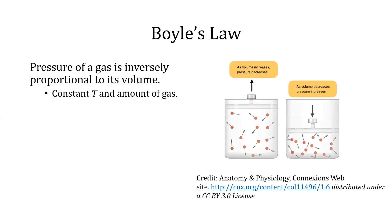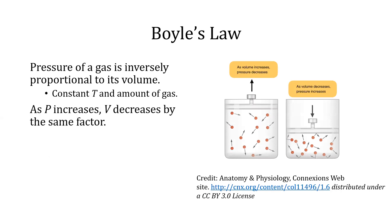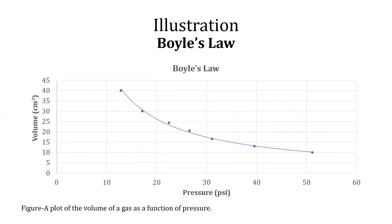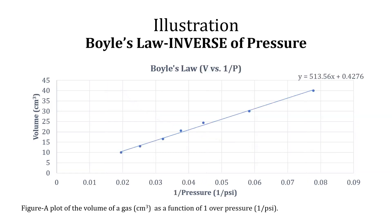Boyle's Law states that the pressure of a gas is inversely proportional to its volume. Both T and the amount of gas are constant. In simple words, as P increases, V decreases by the same factor. Boyle's Law equation is P1 times V1 equals P2 times V2. Here is a plot of V versus P showing a curved figure between variables supporting the inverse relationship, and a second plot showing the linear relationship between V and 1 over P.